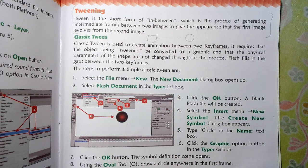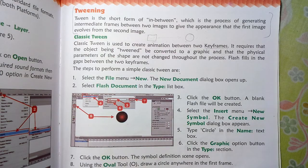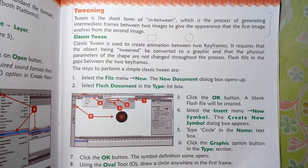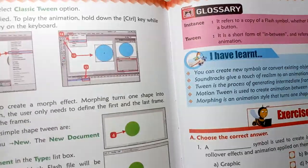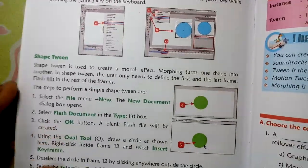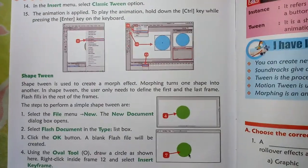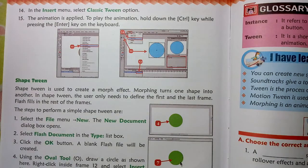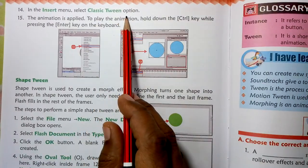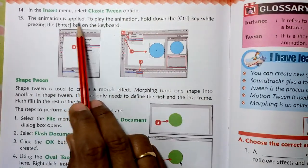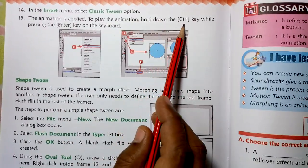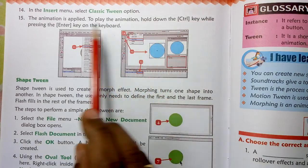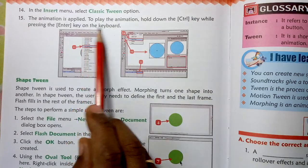Follow all the steps for classic tween. In the Insert menu, select the Classic Tween option. The animation is applied. To play the animation, hold down the Control key while pressing the Enter key on the keyboard.